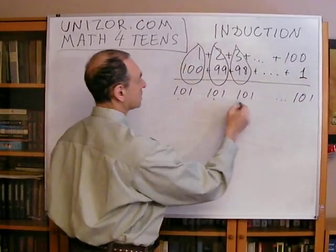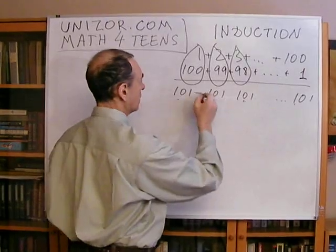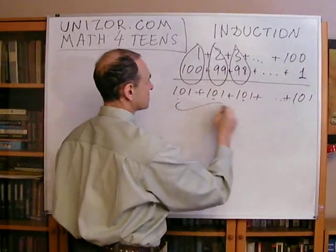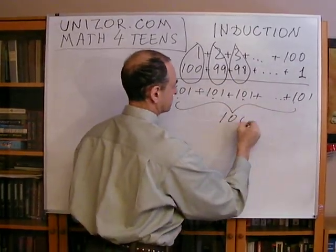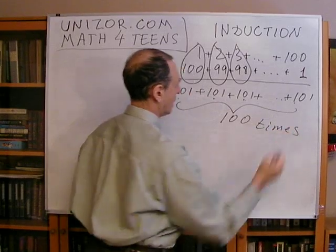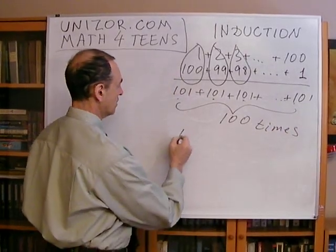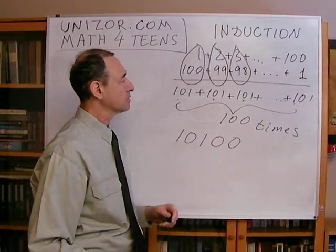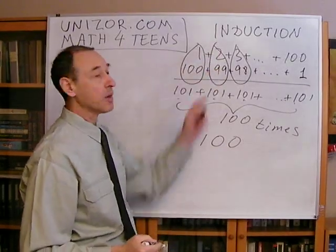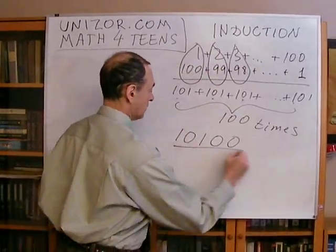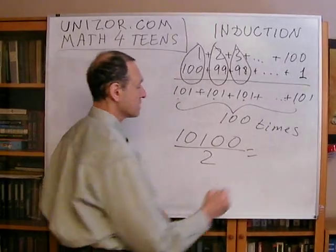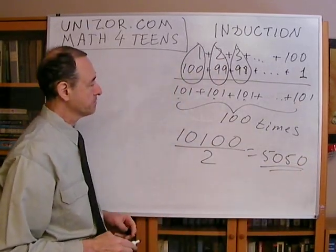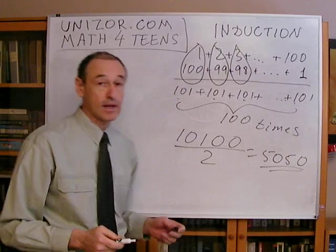How many times does one hundred and one appear in this sum? Obviously, one hundred times. Using multiplication, the total sum will be ten thousand one hundred. But this is double the original sum, so what we are looking for is half of this number, which is five thousand fifty. And that's the answer Gauss gave — and that's the right answer.